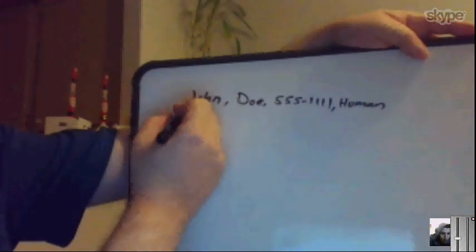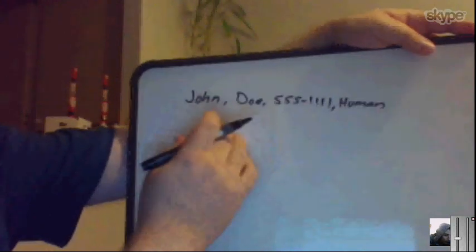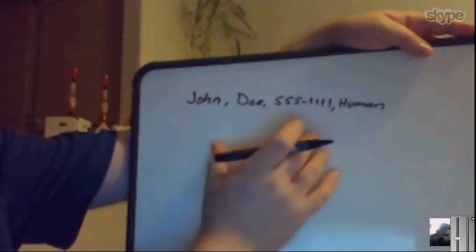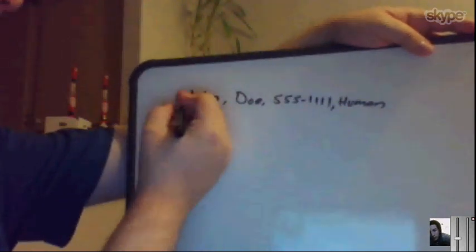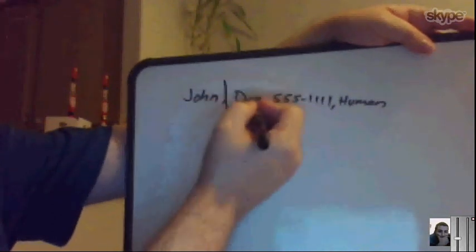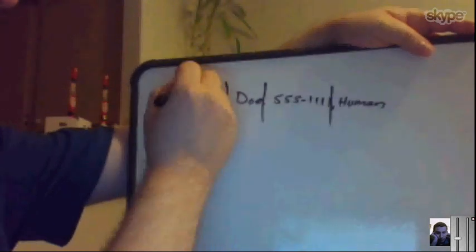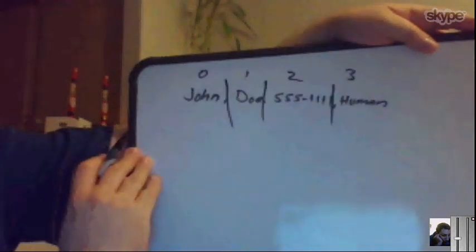When you... this comma is called a delimiter. A delimiter is the thing that separates different parts or different tokens of your data. And when you tokenize something, you're basically saying, okay, I've got this comma, I'm going to chop it off here, I'm going to chop it up here, and I'm going to chop it up here. So now I've got one, two, three, four different tokens, right?